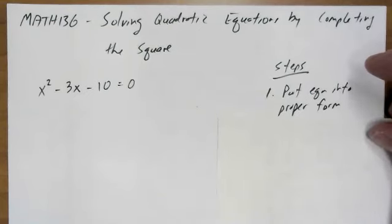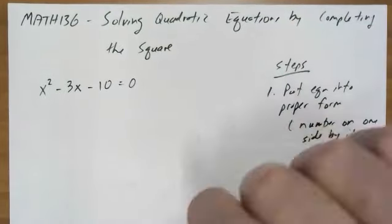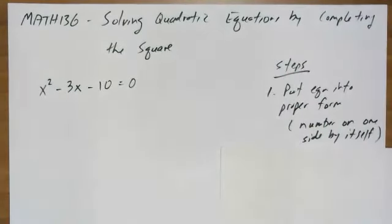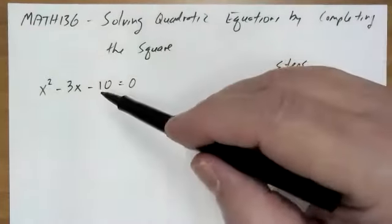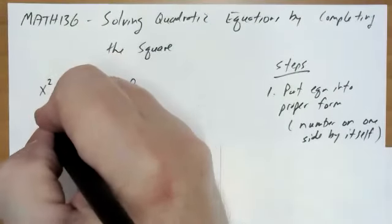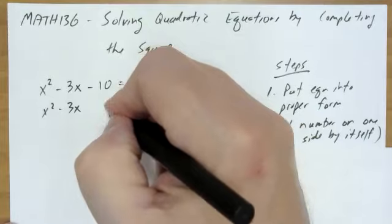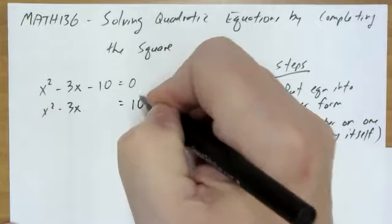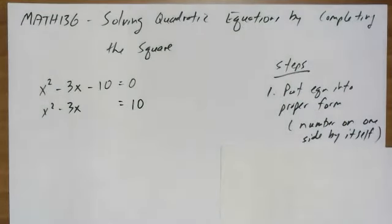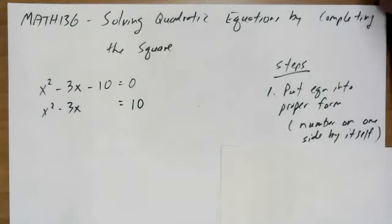So the first step is, when you're given a quadratic equation to solve and we want to use completing the square, we have to put the equation into the proper form. In this case, I actually want the number on one side by itself. If I was going to use factoring, this would be the proper form, but when using completing the square, I want the number by itself on one side. So I need to add 10 to this equation — adding 10 to both sides — so the 10 ends up on the right-hand side. Now this equation is in the form I want to start solving it.